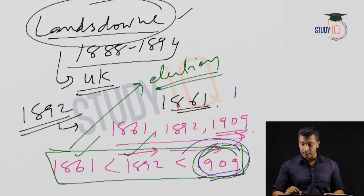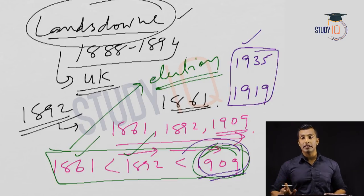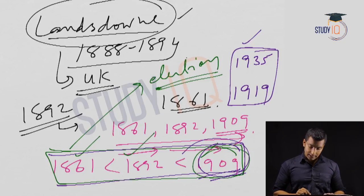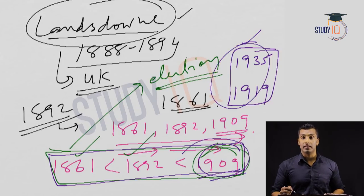There are also acts coming in 1919 and 1935 which will be covered in coming sessions. Lansdowne's period is important for the 1892 Indian Council Act; otherwise, there is nothing important from the exam point of view, so we are skipping this governor-general.